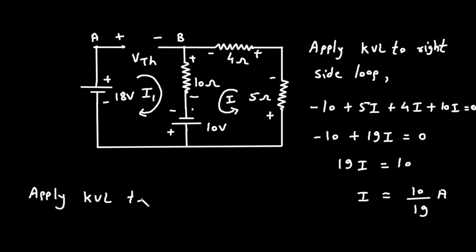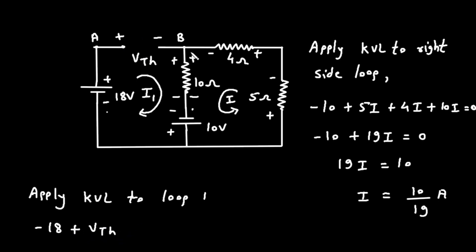Applying KVL to loop 1, starting from this point. According to the direction of this current, it will be positive and negative here. So from here it will be minus 18, then plus VTH, then plus 10 into I1. Here I1 equals current I, so we can write I1 = I.